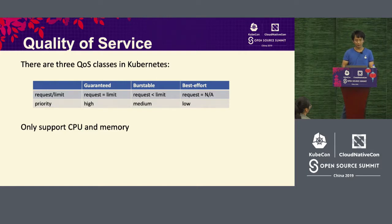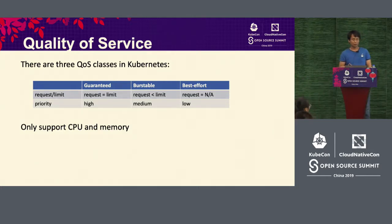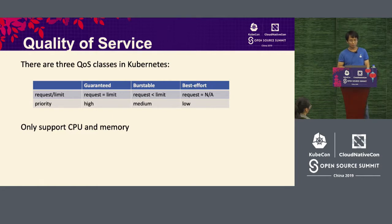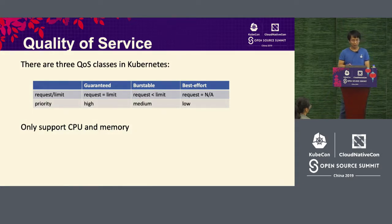In Kubernetes, there are three Quality of Service classes. The first is Guaranteed — when the request equals the limit for all containers, the resource is assigned the highest priority. The second is Burstable — you have set a request and a limit, but the request is smaller than the limit, so resource usage will not exceed the limit. The last type is Best Effort — it doesn't set any request or limit, so it can only use residual resources. The standard Kubernetes QoS only considers CPU and memory.